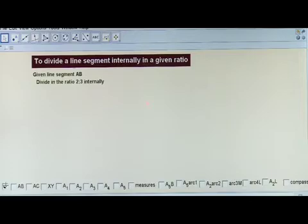Suppose we are given line segment AB and we have to divide it internally in the ratio 2 is to 3. Line segment AB is drawn. Internal division means we have to locate a point P on the line segment AB so that AP is to PB is equal to 2 is to 3.